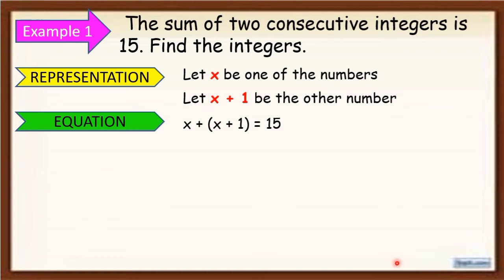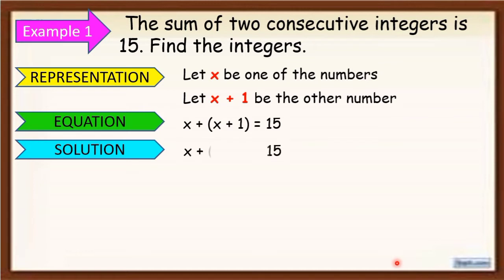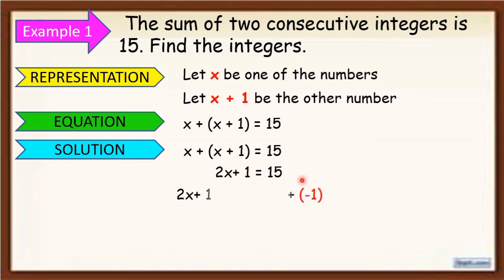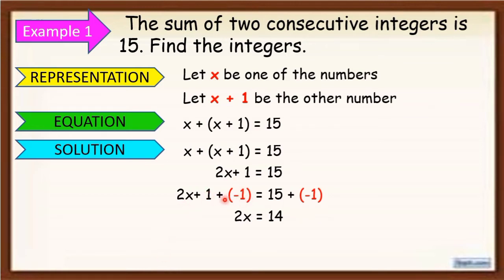After making the equation, let's do the computation. We are going to apply the APE in this equation. First, we add the similar terms — the two x's. It will become 2x plus 1 is equal to 15. Now we add both sides with negative 1 to isolate 2x: 2x plus 1 plus negative 1 is equal to 15 plus negative 1. It will become 2x is equal to 14, because 1 plus negative 1 equals 0, and 15 plus negative 1 equals 14.